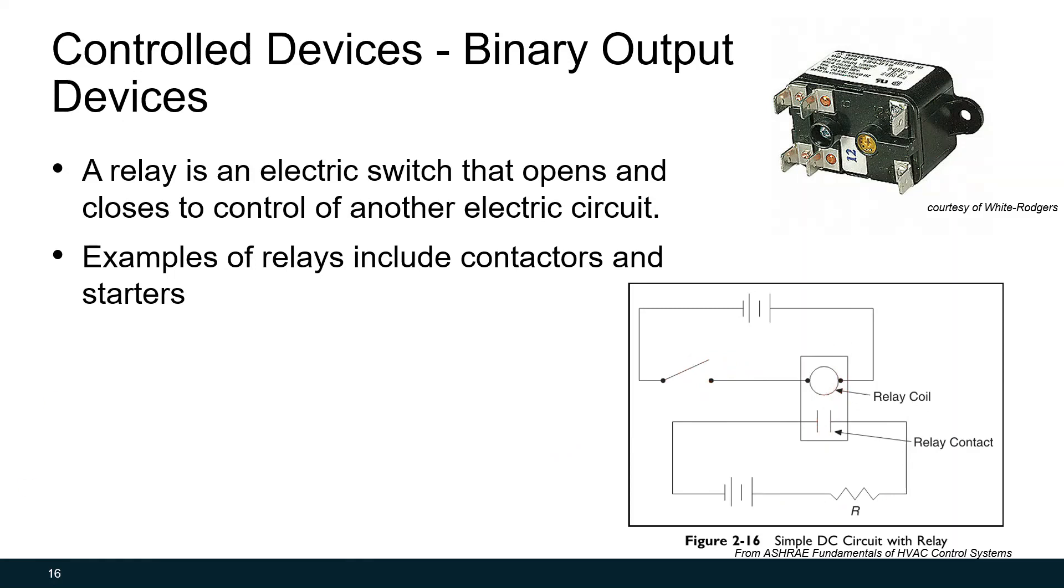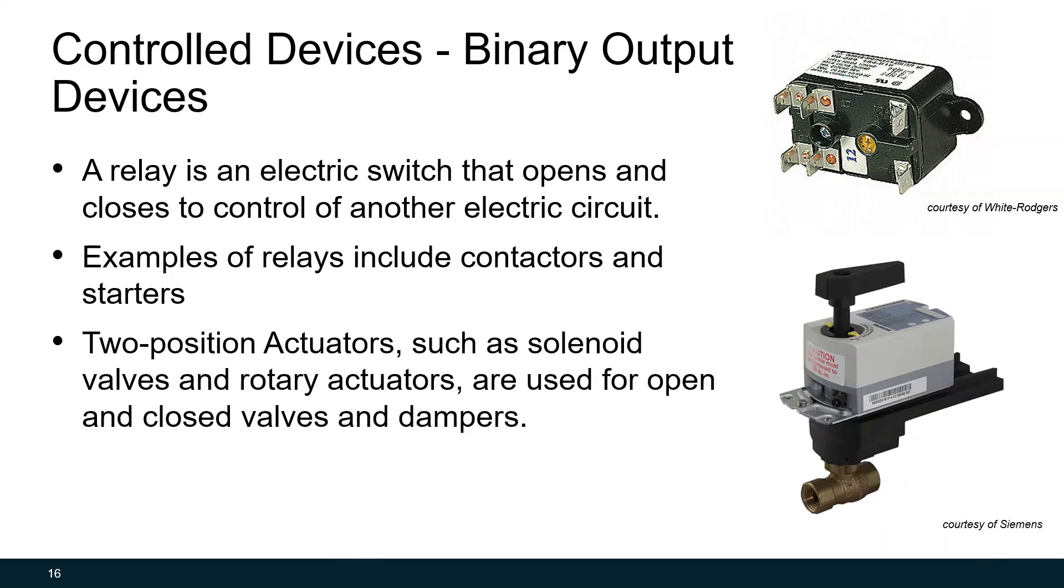Another example of a binary output device are two-position valves and dampers. These can be solenoid valves or they can have rotary actuators, but they're basically used for open and closed valves and dampers.